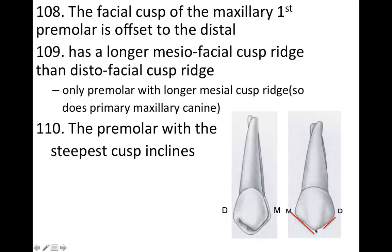The facial cusp of the maxillary first premolar is offset to the distal — pushed toward the distal just a little bit. This means the tooth has a longer mesiofacial cusp ridge than distal facial cusp ridge. Because the cusp tip is offset to the distal, the mesial ridge is longer than the distal, which is typically the other way around for most teeth. Notably, the primary maxillary canine also has this feature.